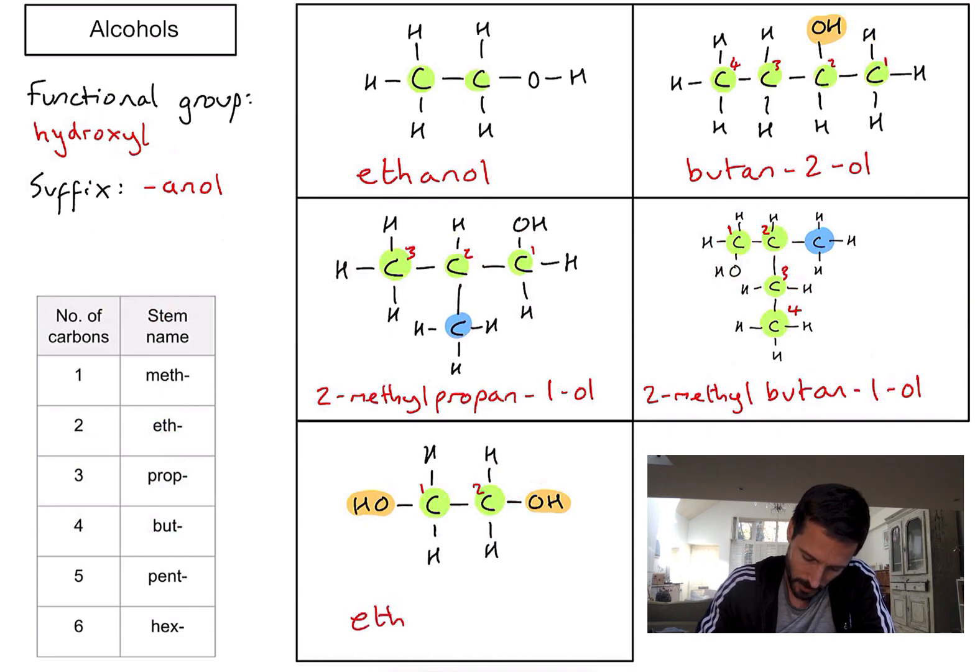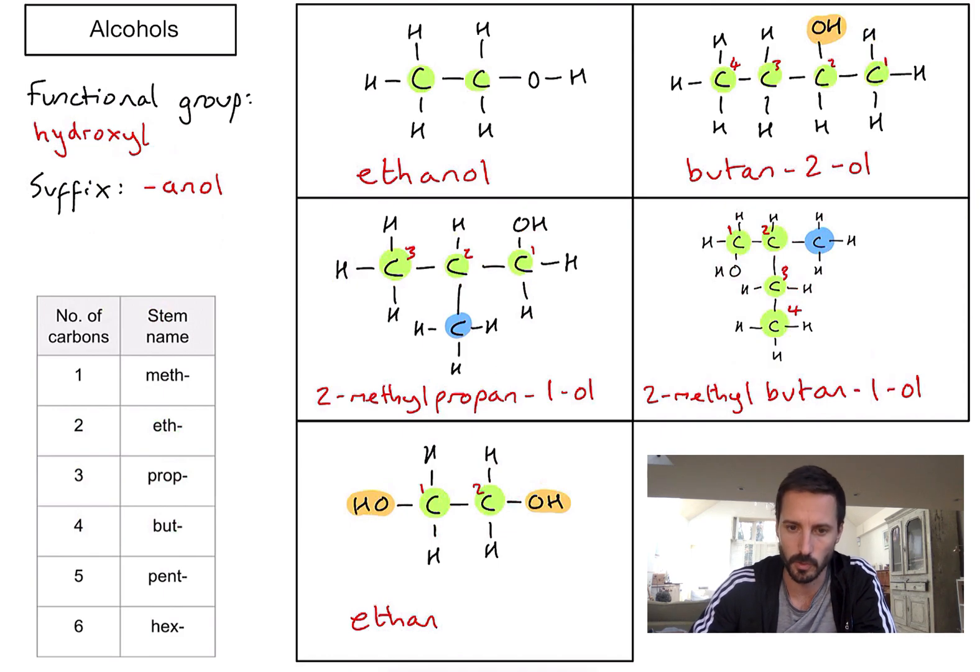So I'm going to have ethan, and then I want to indicate where both of those hydroxyl functional groups are. So I'm going to have to put one, two, and because there are two of them, I need to put di before finishing off with -ol. Ethane-1,2-diol. And that's about it for alcohols. Hopefully this video is of some help.